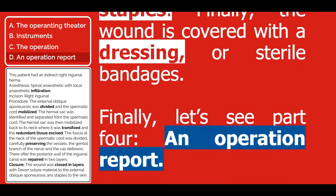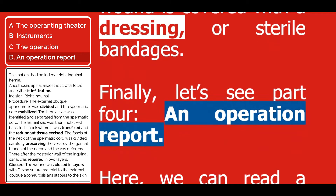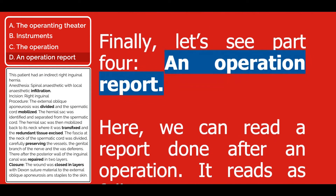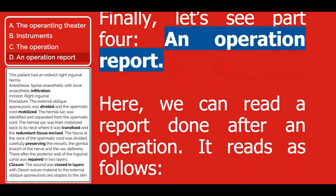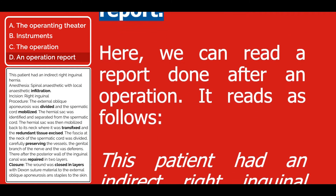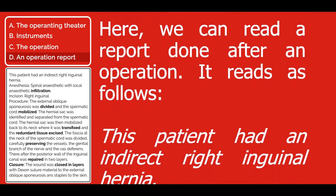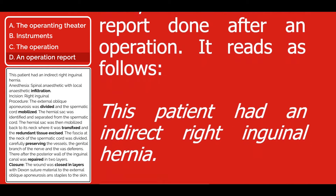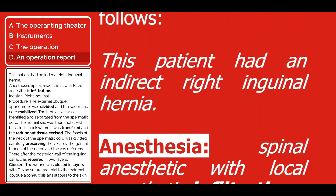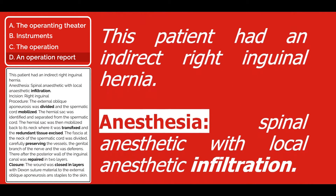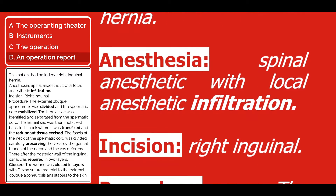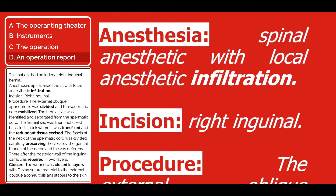Finally, let's see part four, an operation report. Here we can read a report done after an operation. It reads as follows: This patient had an indirect right inguinal hernia. Anesthesia: spinal anesthetic with local anesthetic infiltration. Incision: right inguinal.